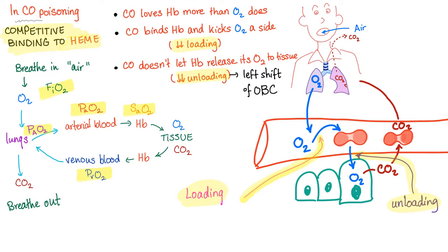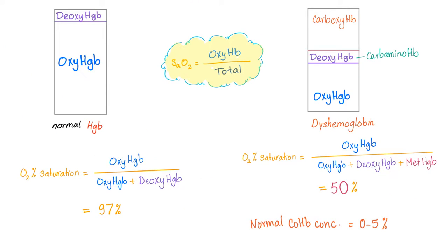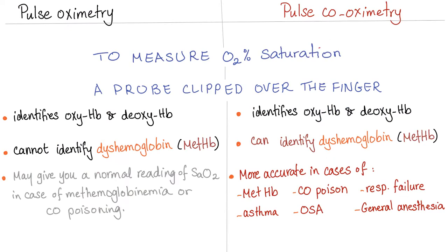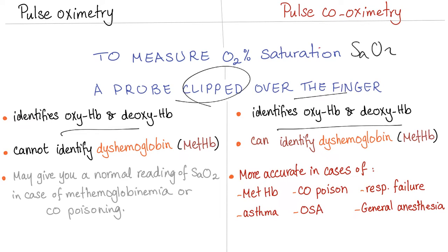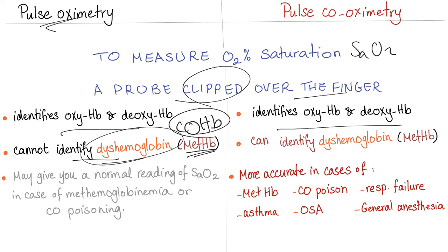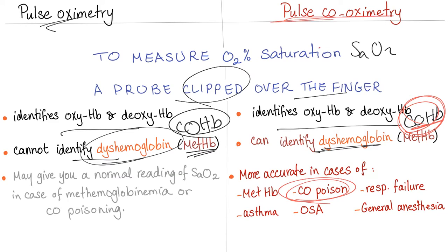We give 100% oxygen, and if that fails or symptoms are severe, we use the hyperbaric oxygen chamber. CO poisoning causes carboxyhemoglobin, which decreases oxygen saturation (SaO2). For monitoring, you should use pulse CO-oximetry, not standard pulse oximetry. Both measure oxygen saturation, but standard pulse oximetry cannot detect abnormal hemoglobins like methemoglobin or carboxyhemoglobin — it will be falsely normal. Pulse CO-oximetry can identify these abnormal hemoglobins. In CO poisoning, use pulse CO-oximetry.